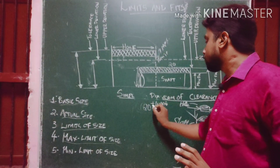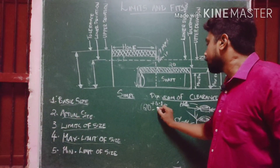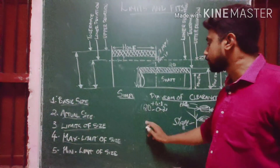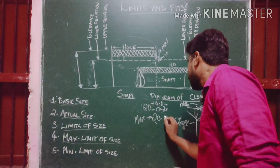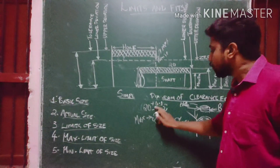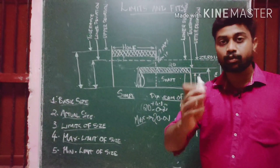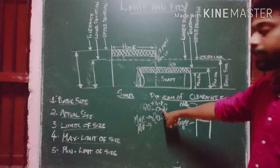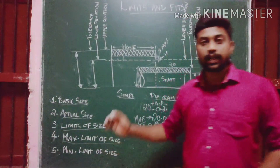For example, if we have a 20 mm shaft with a tolerance of 0.01 mm, that 0.01 mm is the tolerance value representing the allowable deviation.